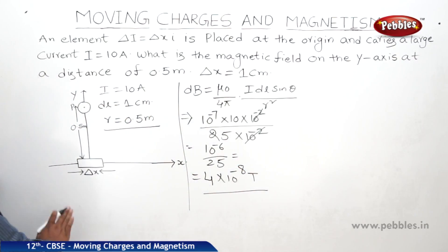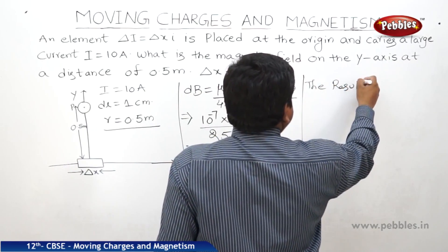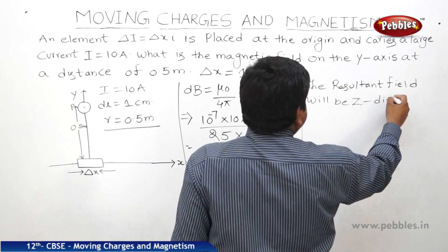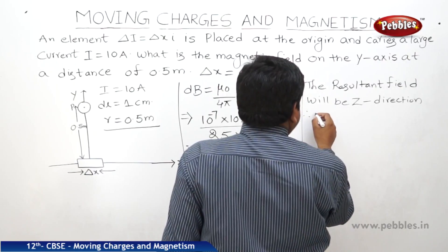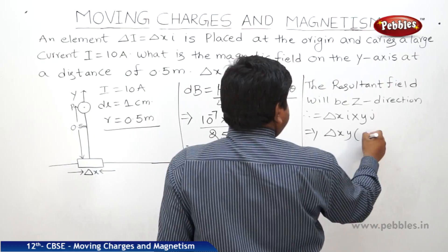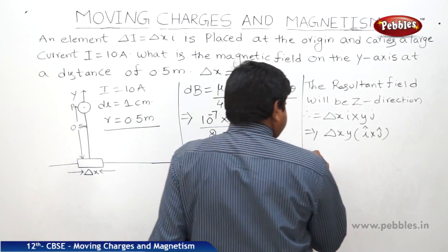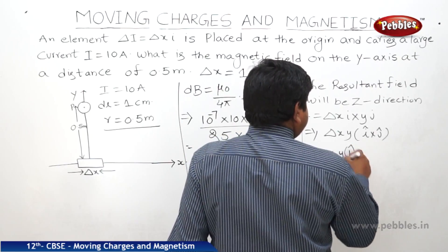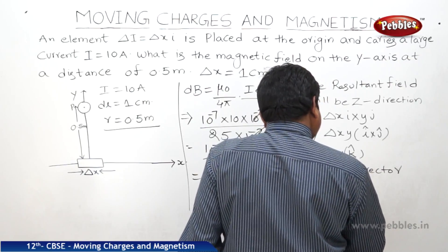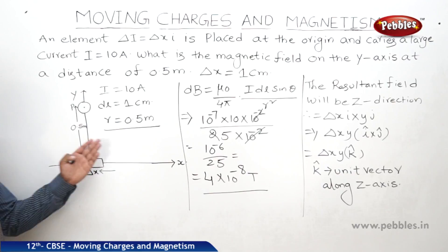Current is in the x direction (x̂ i). Field is in the y direction (ŷ j). The resultant will be in the z direction. So the resultant field will be in the direction of the z-axis. It is delta x times i cross ŷ j, so delta x times y times (i cross j). We know that i cross j equals k, where k is the unit vector along the z-axis. So the magnetic field is in the k-cap direction — unit vector along the z-axis. This is a small overview of problems related to Biot-Savart's law.